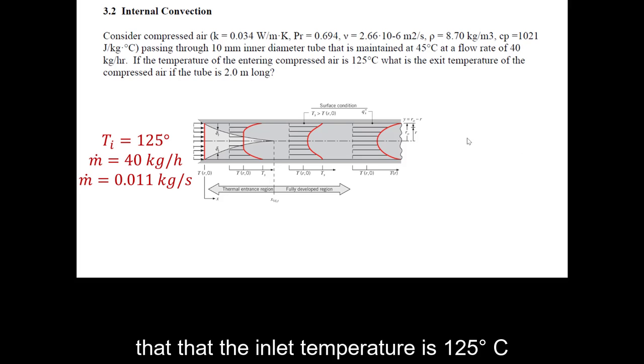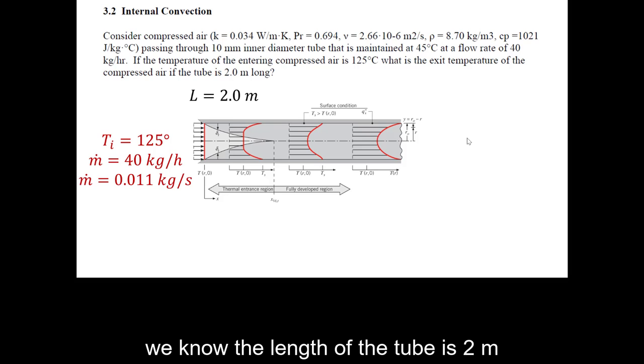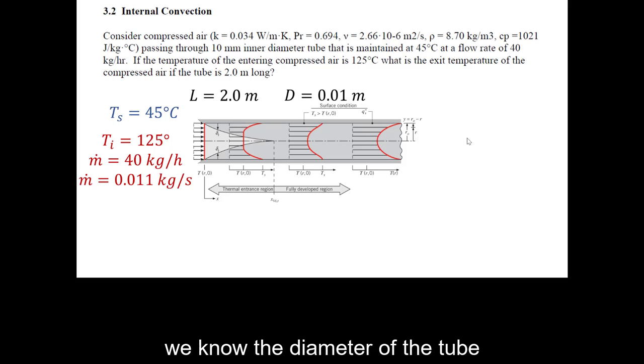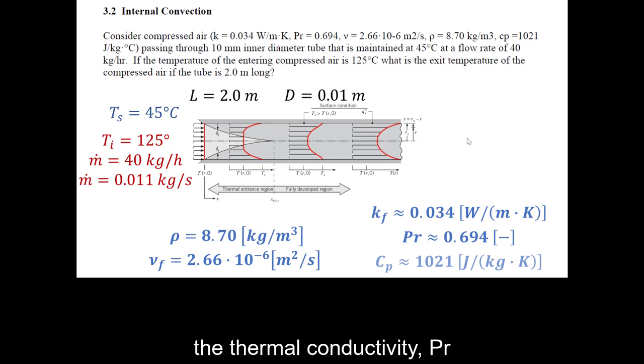We know that the inlet temperature is 125 degrees Celsius. We're given a mass flow rate in kilograms per hour, but I've converted that to kilograms per second. We know the length of the tube is 2 meters. We're given that the surface temperature of the tube is 45 degrees Celsius. We know the diameter of the tube. We're also given a host of fluid properties like the density, the viscosity, the thermal conductivity, the Prandtl number, and the specific heat. What we don't know is the temperature at which the fluid is exiting the tube, and that's what we're asked to find.